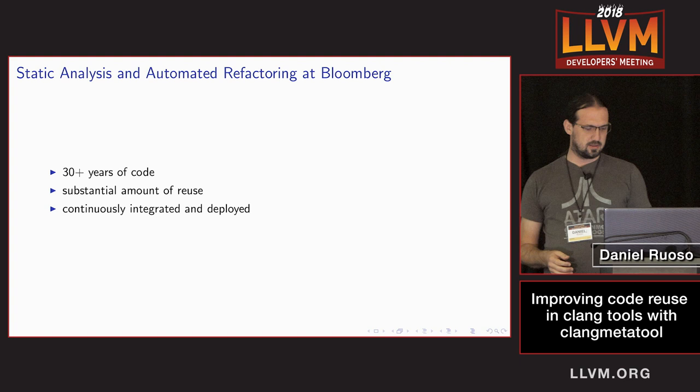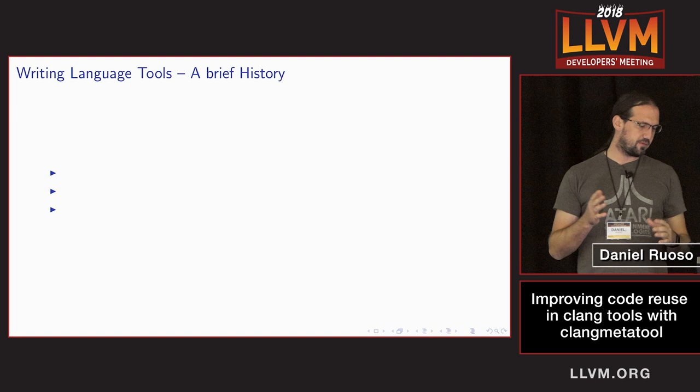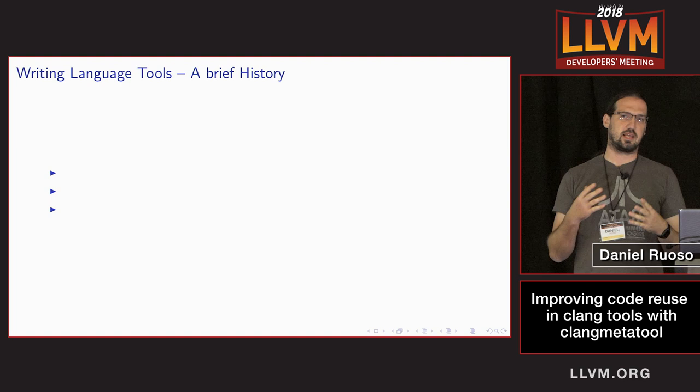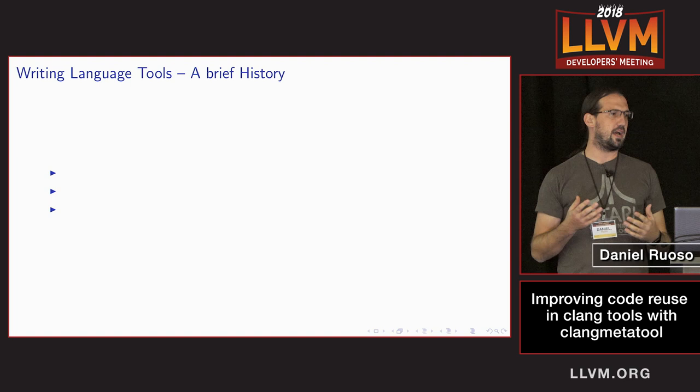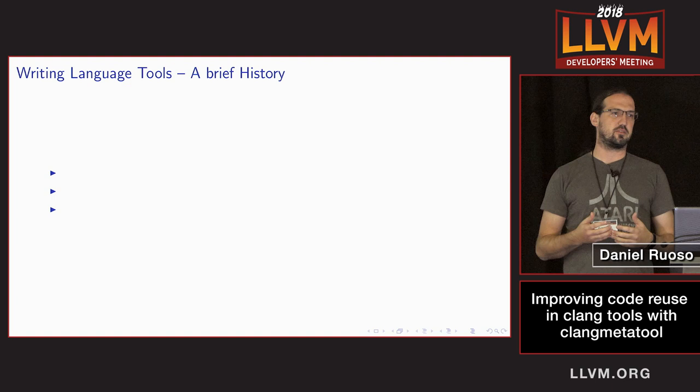The space of writing language tools is not new — there is a long history. But I want to focus specifically on C and C++, because these are languages complex enough that it's really hard to create a tool that has the same semantics the compiler will get. If you want to write a tool that processes C and C++, you kind of have to use the compiler, because modeling the entire language semantics yourself is a daunting task.